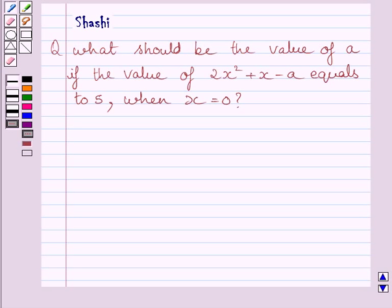Hi and welcome to the session. Let us discuss the following question. Question says, what should be the value of A if the value of 2x squared plus x minus A equals to 5 when x is equal to 0?